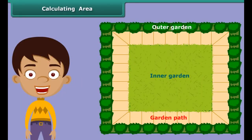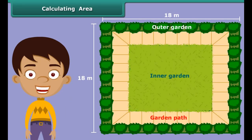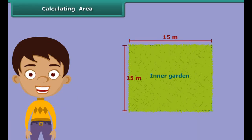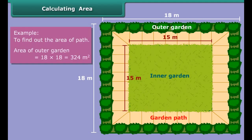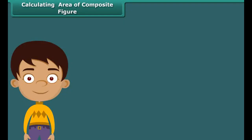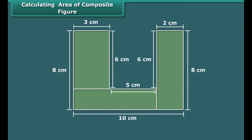Suppose there is a square garden of 18 meters. We want to make a provision for a path on all four sides, and the inner garden after the path is made should be 15 meters. We want to find the area of the path. To do so, calculate and deduct the area of the inner garden from the area of the outer garden. The area of the outer garden is 324 square meters, and the area of the inner garden is 225 square meters. So the area of the path is 324 minus 225, which equals 99 square meters.